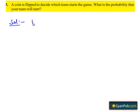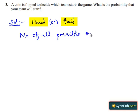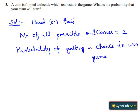The number of all possible outcomes is equal to two. The number of favorable outcomes — the probability of getting a chance to win the game — is equal to one.